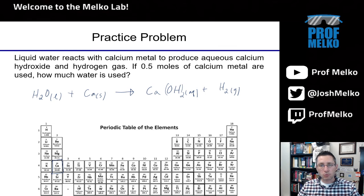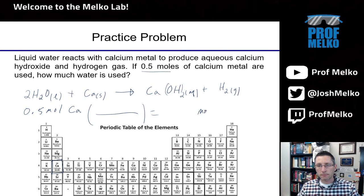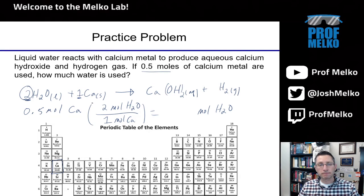Now we go through and balance it. There's one calcium on each side — that looks good. On the right there are four hydrogens and two oxygens, so I put a 2 in front of H2O. Now the reaction is balanced: four hydrogens, two oxygens, one calcium on each side. Given 0.5 moles of calcium, how much water is used? I want to go from moles of calcium to moles of water. From the balanced equation there is one mole of calcium for every two moles of water, so the answer is 1.0 moles of H2O.